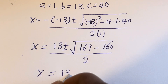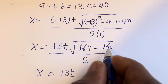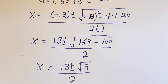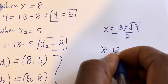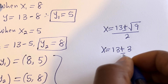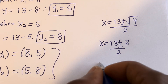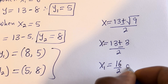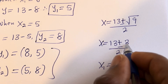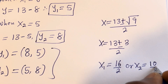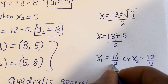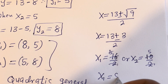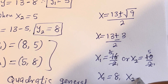S is equal to 13 plus or minus the square root of 169 minus 160, divided by 2. That simplifies to the square root of 9 divided by 2, which is 3 divided by 2. So S1 is equal to (13 plus 3) divided by 2, which is 16 divided by 2, giving S1 equal to 8. And S2 is equal to (13 minus 3) divided by 2, which is 10 divided by 2, giving S2 equal to 5.